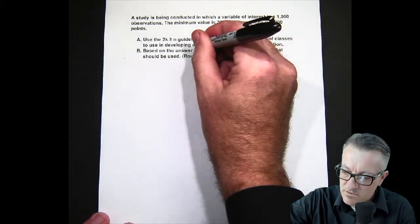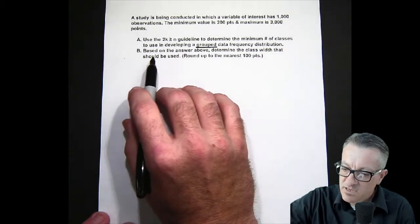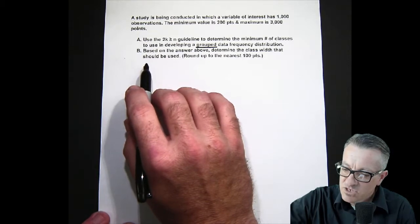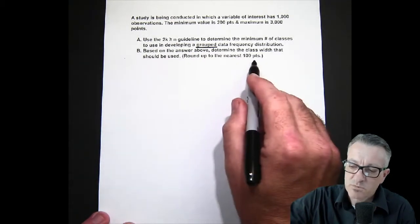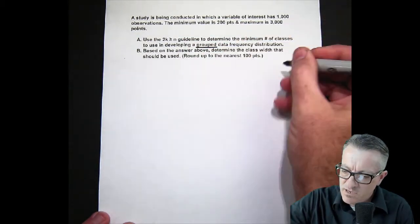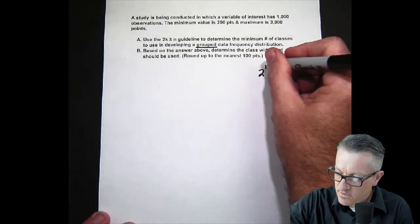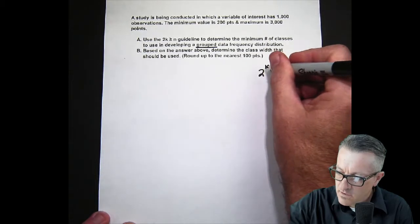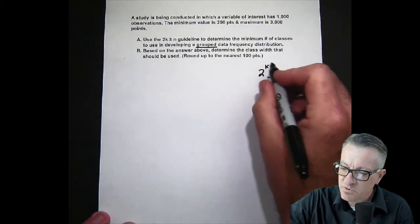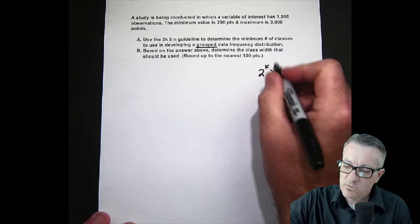That's a big thing, is this is grouped. And then the next thing will be based on the answer above: determine the class width that should be used and we want to round up to the nearest 100 points. So this rule here, it should actually be 2 exponent k greater than or equal to n. And what this is, is a rule that's used to determine the number of classes.